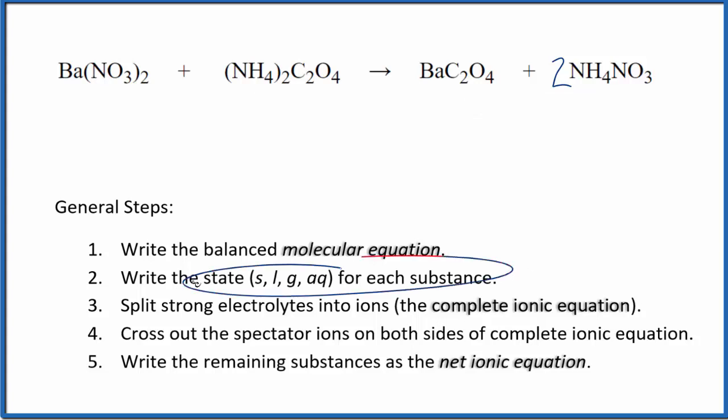Now we can write the state for each substance. That looks like this. Nitrates are soluble in water and the ammonium compounds with the ammonium ion are very soluble. So these three are all soluble and will dissociate into their ions.